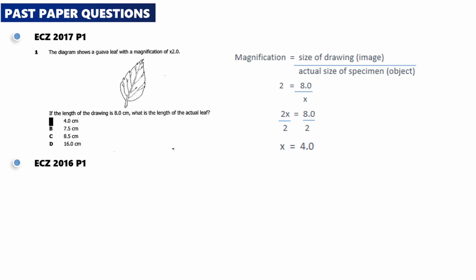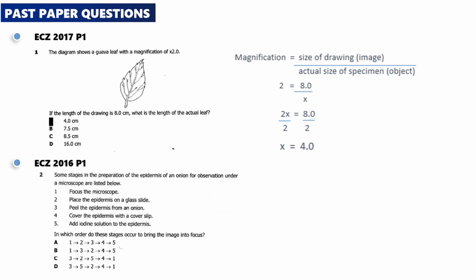ECZ 2016 paper 1. Some stages in the preparation of the epidermis of an onion for observation under a microscope are listed below. Number 1, focus the microscope. Number 2, place the epidermis on a glass slide. Number 3, peel the epidermis from an onion. Number 4, cover the epidermis with a cover slip. Number 5, add iodine solution to the epidermis. In which order do these stages occur to bring the image into focus?